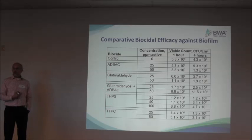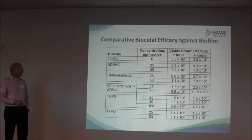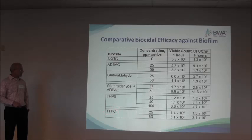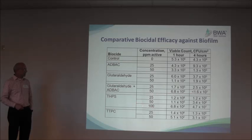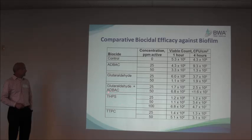These are common biocides used in the oilfield industry: an ADBAC-type quat, glutaraldehyde, glutaraldehyde combined with an ADBAC quat, THPS which is a phosphonium biocide, and TTPC which is another phosphonium quat. Looking at the results, you need relatively high levels of biocides to get significant kill in this biofilm. Some biocides are fairly effective — quat-glutaraldehyde combinations get down to below detectable limits in four hours. THPS is probably the least effective here; you need 100 ppm to get significant kill.